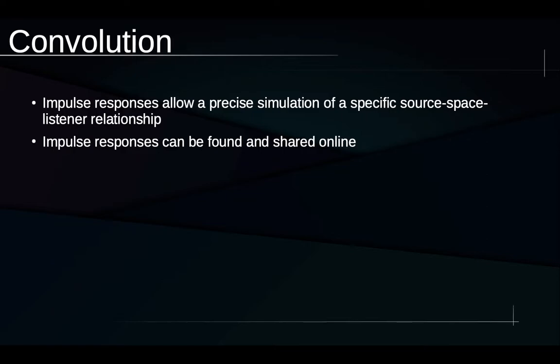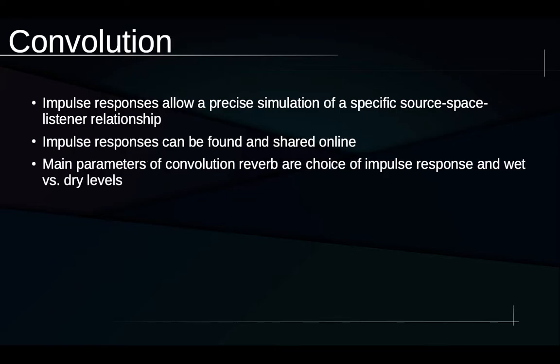Convolution reverb uses impulse responses to create a precise simulation of a specific source space and listener relationship. The kind of neat thing about this is that these impulse responses we can record them ourselves and share them online with other people. We can find the impulse responses that other people can make. For some time in the late 1990s in the heyday of the domestic internet, I had found a site where someone was freely sharing impulse responses that they had recorded or collected from around the world. There was a particular subway station in Sweden that I used as the reverberation in lots of pieces through the magic of convolution reverb. I had never been to that subway station or Sweden, but I was able to simulate sounds being in that space using convolution reverb. Quite fun.